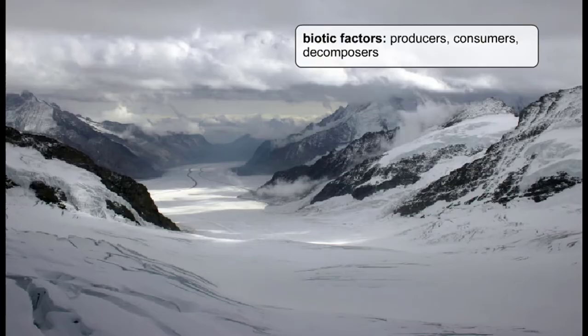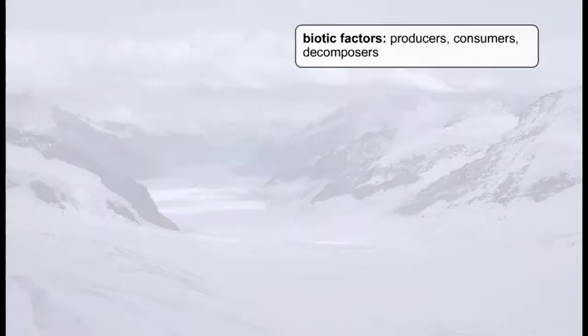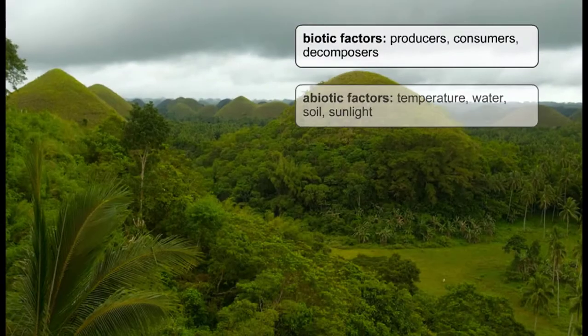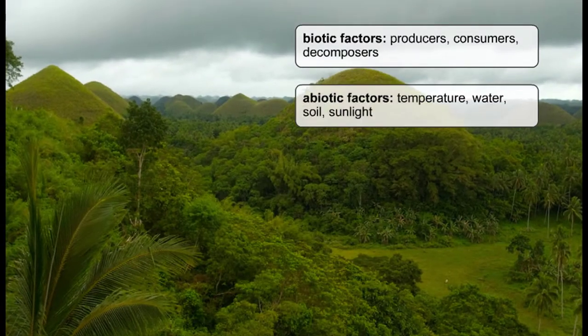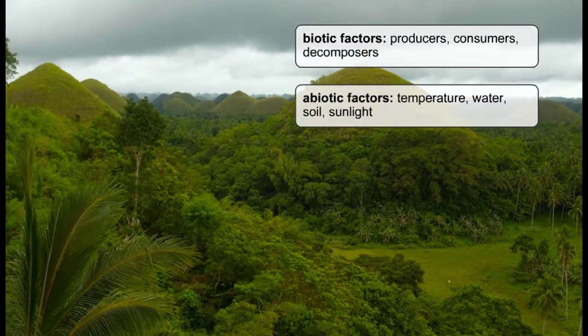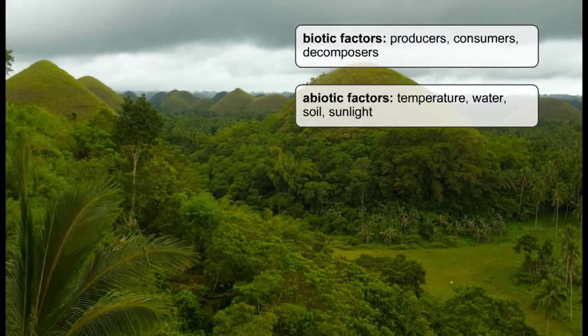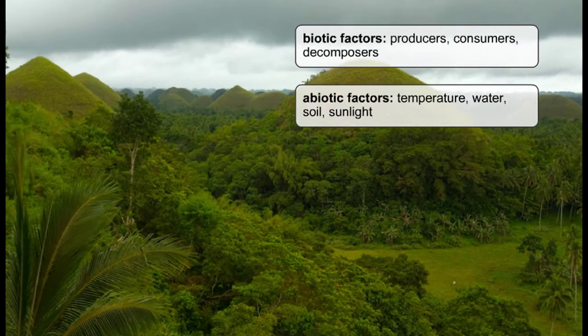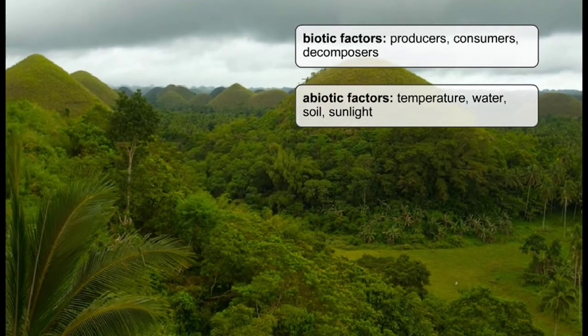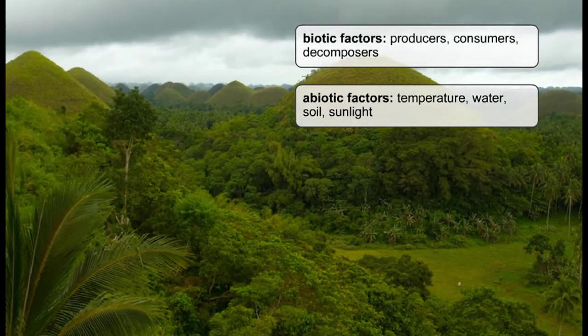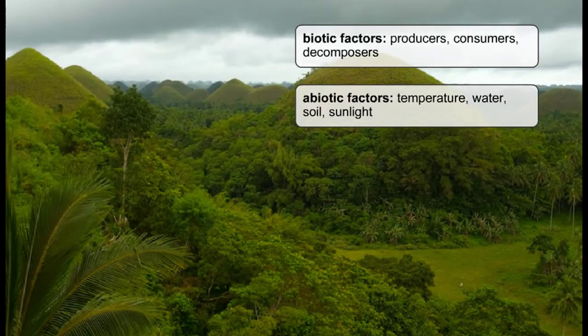The environment forms the non-living component of the ecosystem, such as temperature, sunlight, water, and soil composition. These are called the abiotic factors.